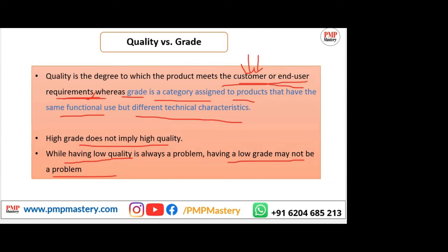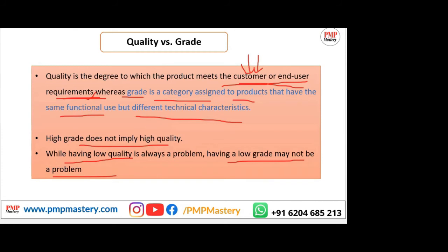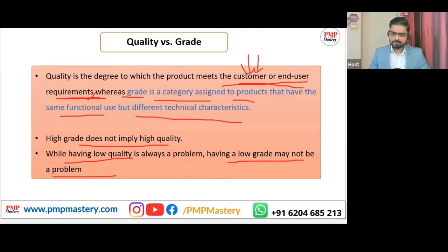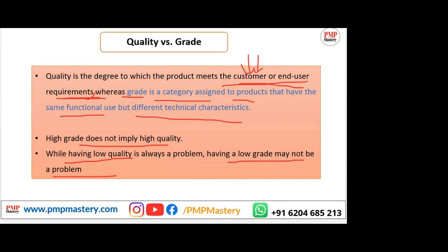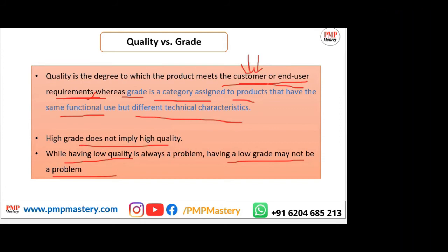Quality is more subjective whereas grade is more objective, because grade is associated with technical characteristics. For example, if you want just a phone, the requirement is only having a phone — it doesn't matter the grade. We sometimes misunderstand quality and meeting specifications. You can specify something and must meet the technical specification, but that doesn't mean it's high quality. Meeting the specification is different from quality — quality is subjective whereas grade is objective.